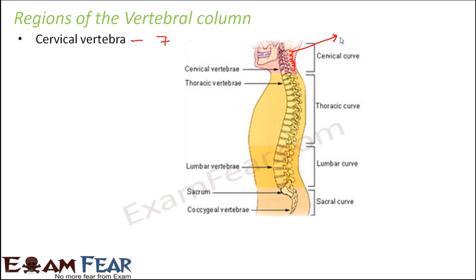The first vertebra of the vertebral column is the atlas, which connects with the occipital condyles of the skull — that is where the entire story of the vertebral column starts. Each vertebra has a hollow central portion known as the neural canal, and this neural canal is the region through which the spinal cord passes.